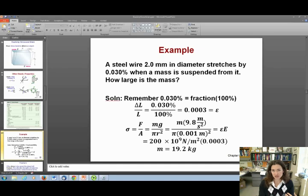When we convert 0.03%, that's the fraction 0.0003, and that equals the change in length over initial length, the strain. The stress, sigma, equals the force per unit area. The force is gravity, mg, and the area is the cross-sectional area of the wire, which is a circle. The area of a circle is pi r squared. So sigma equals m times 9.8 meters per second squared divided by pi divided by the radius of the wire, which is half the diameter, 0.001 meters, squared.